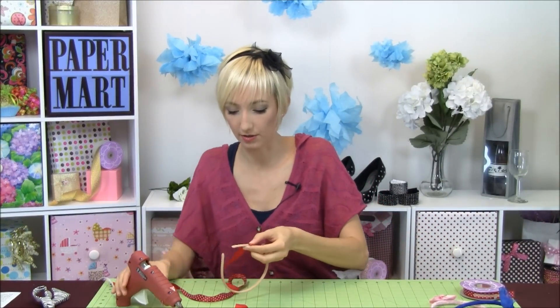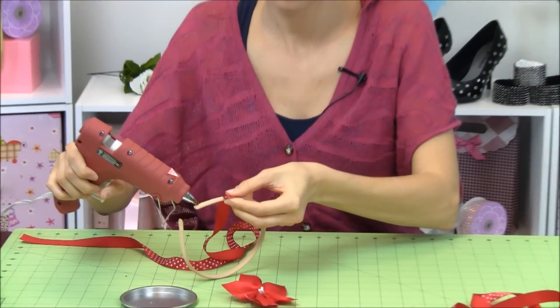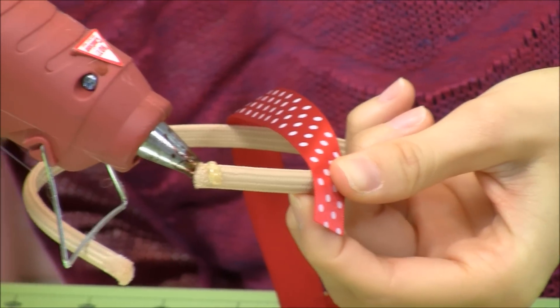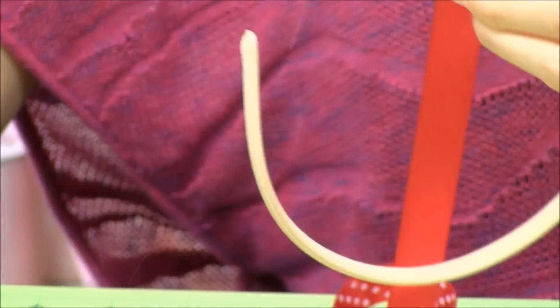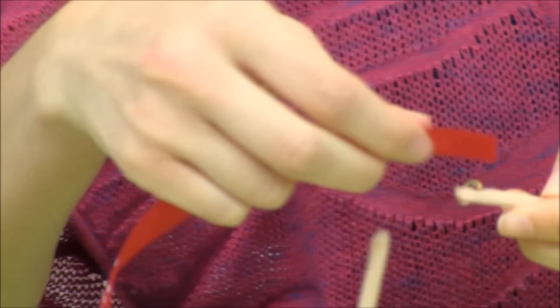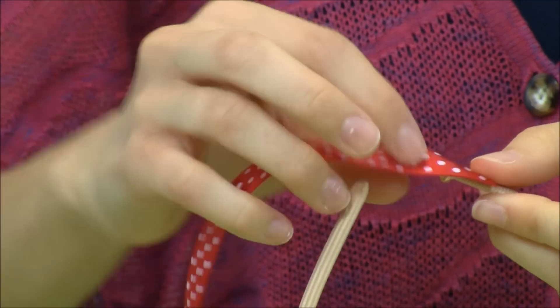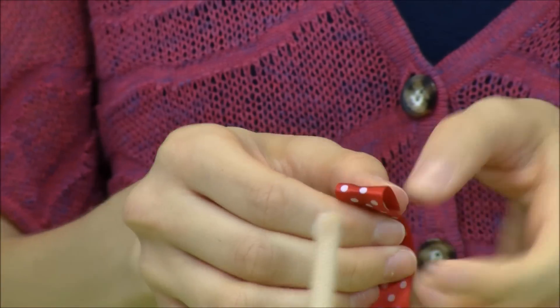Alright, so on one of the ends here, we're just going to do a little glue dot. In fact, I'll do some on both sides. And I'm just going to do this first to kind of cover up the end, because we don't want to see any of that at the end.